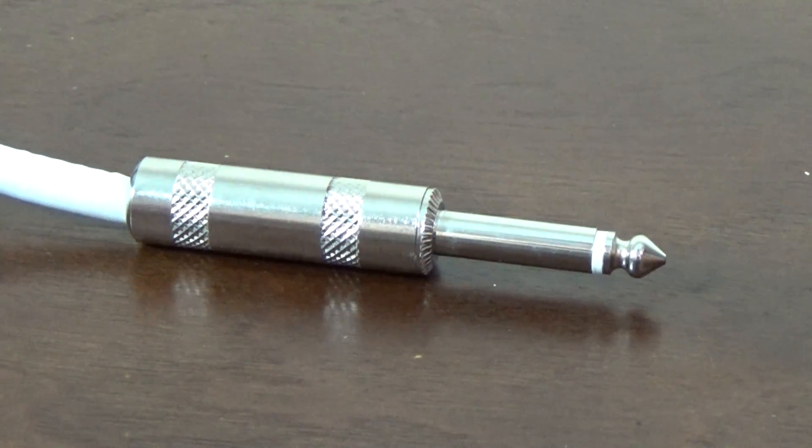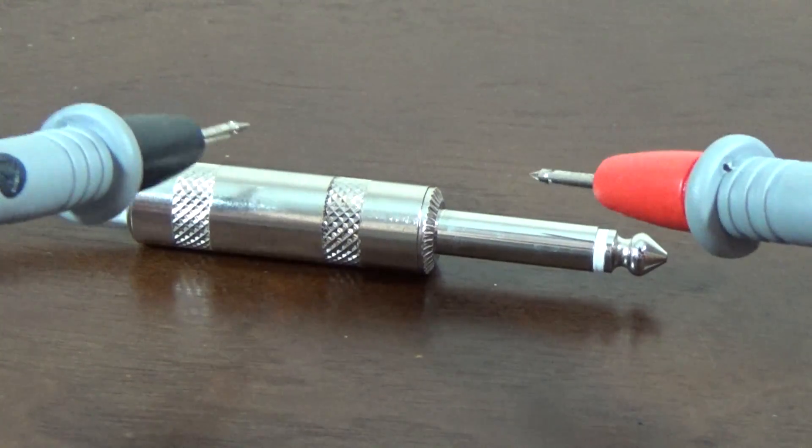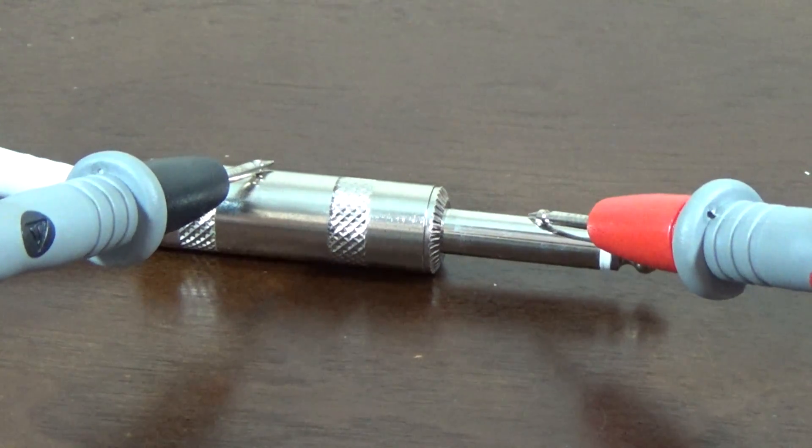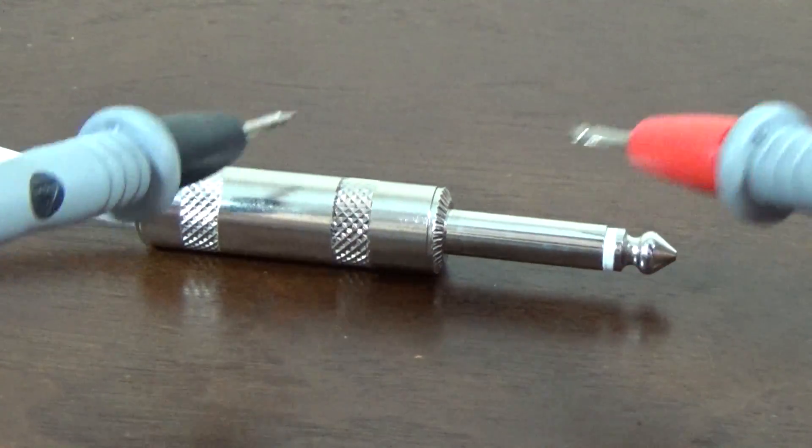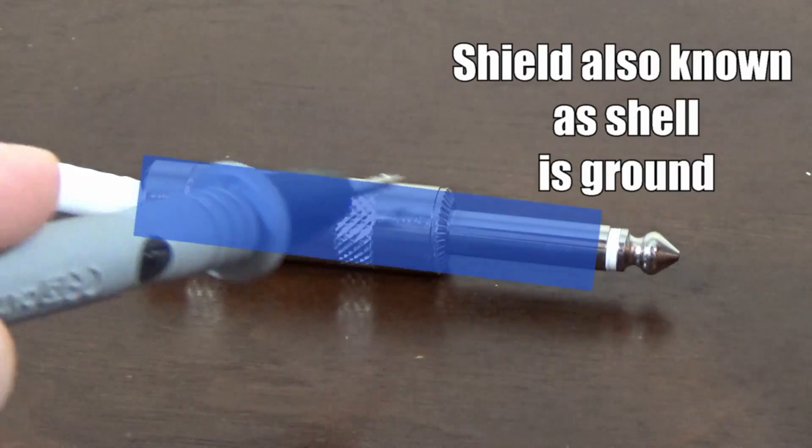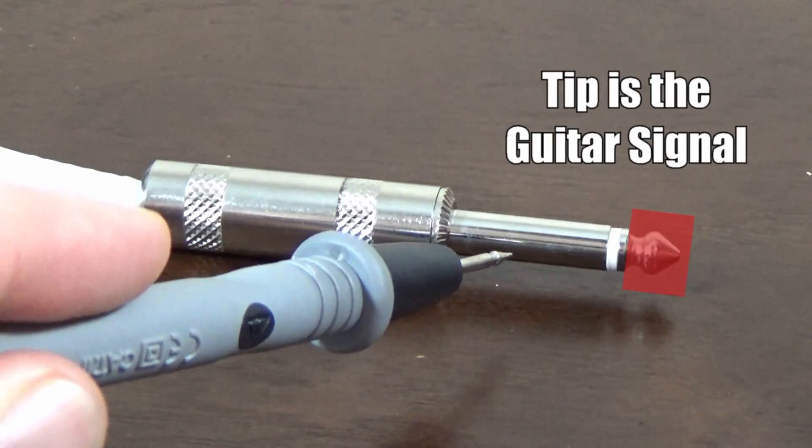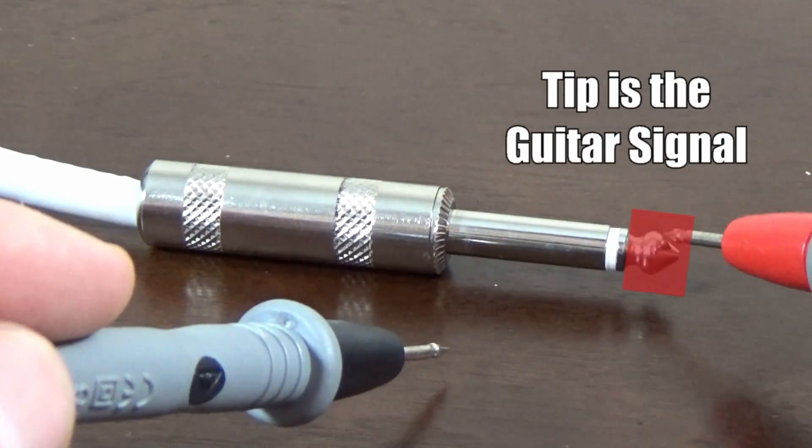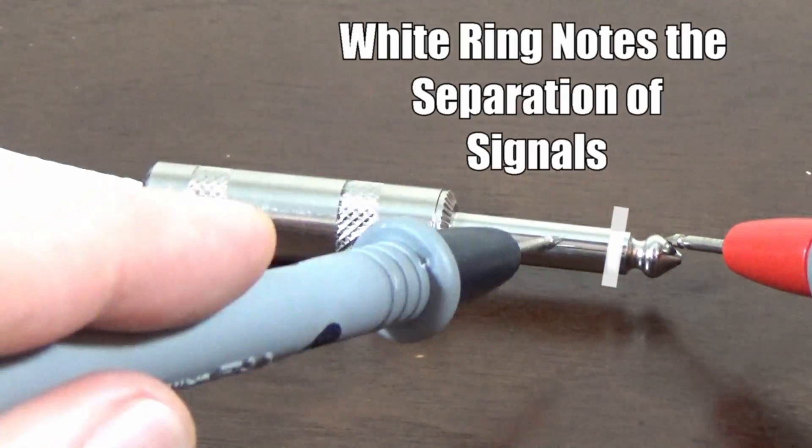If we start with the male quarter inch jack it makes it easier to understand how the female jack is connected. Like the female mono jack there's two connections here. The shield is the ground and the tip is the guitar signal. The two regions are separated by the white ring in this cable's case.